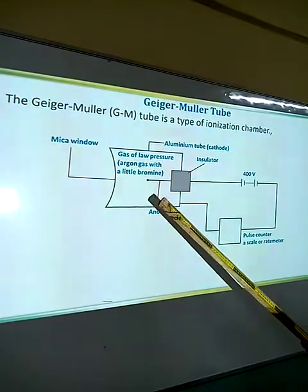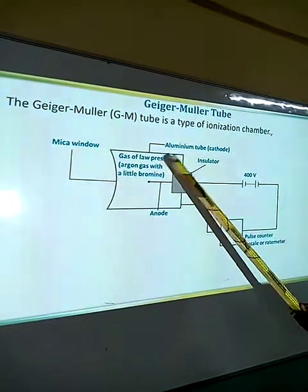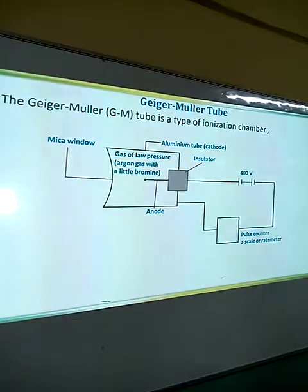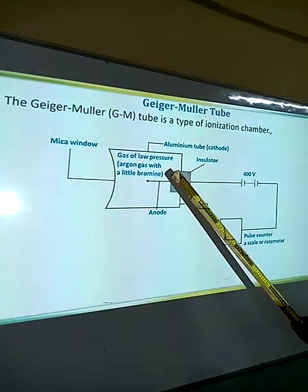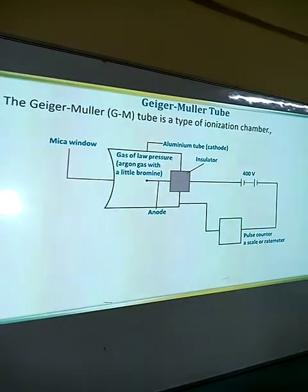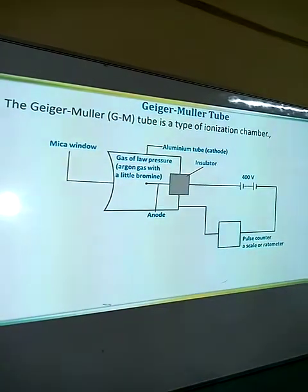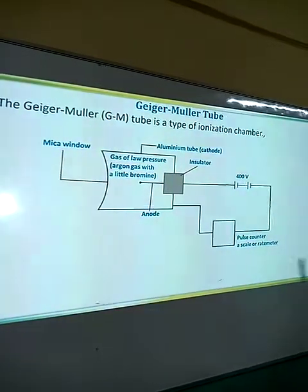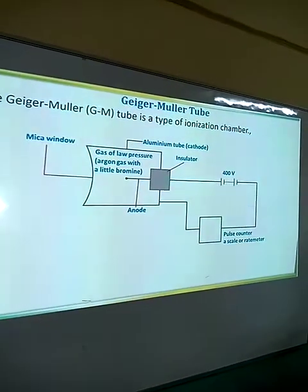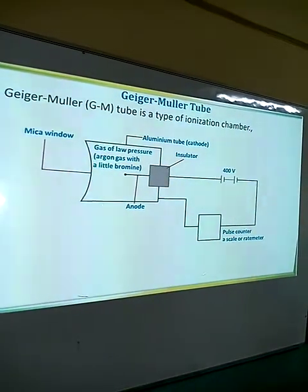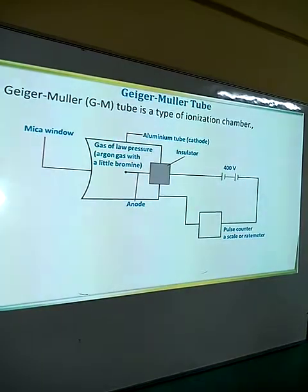Positive ions will be attracted towards the cathode, while negative ions — that is, the electrons — will be attracted towards the anode. When that happens, a small current, which we call a pulse of current, is generated. That generated current is of smaller value, so we have an amplifier — not indicated here — which amplifies the current so it can be recorded by the pulse counter or the scalar.